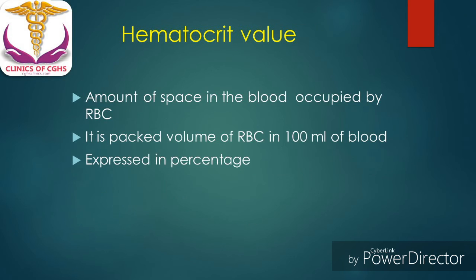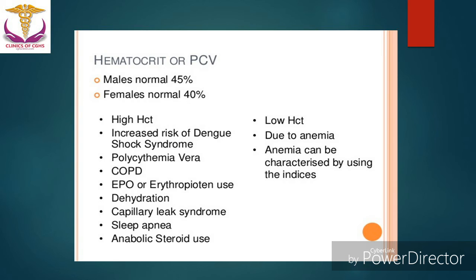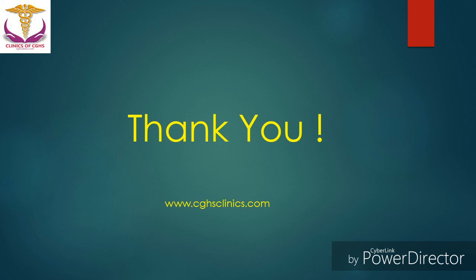The last parameter is the hematocrit value. Hematocrit, or packed cell volume (PCV), is the packed volume of RBCs in 100 ml of blood, expressed as a percentage. In males it is normally 45% and in females 40%. High hematocrit is observed in dengue shock syndrome, polycythemia vera, various hypoxic conditions such as sleep apnea, and dehydration. Low hematocrit value is observed in anemia.